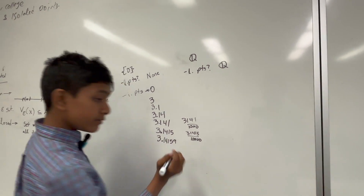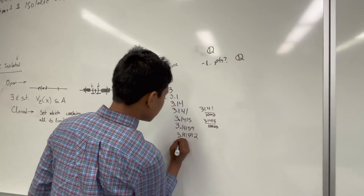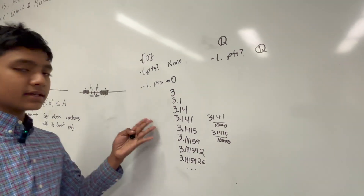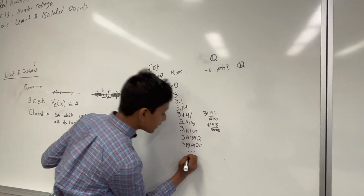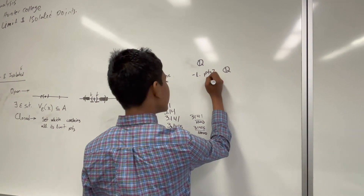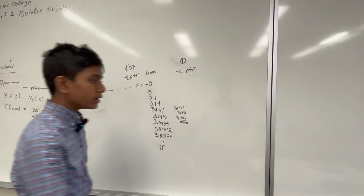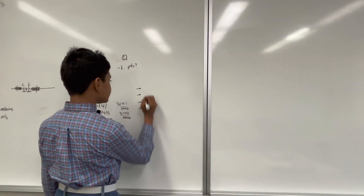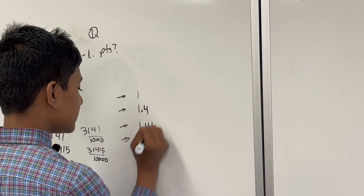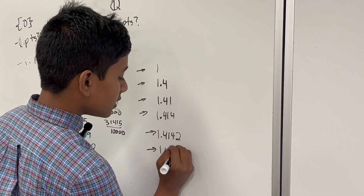What about 3.1415, 3.141592, 3.1415926? And eventually, what do you think this is approaching? This is pi — it's approaching pi. But all of these numbers are rational, right? So that means that pi is a limit point, but pi is not included in Q. We can actually make any real number a limit point by just taking a sequence of finite decimal digits. For example, rad 2: we start with 1, then go to the next digit, then the next, and so on — we are still forming rational numbers.